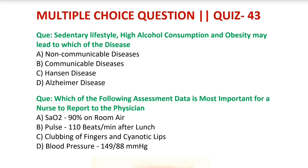Hansen's disease का दूसरा नाम leprosy है, जिसका causative organism है Mycobacterium leprae. यह एक curable chronic infectious disease है जो skin को mostly affect करती है. इसमें nerve damage हो जाती है, skin पर bumps हो जाते हैं.